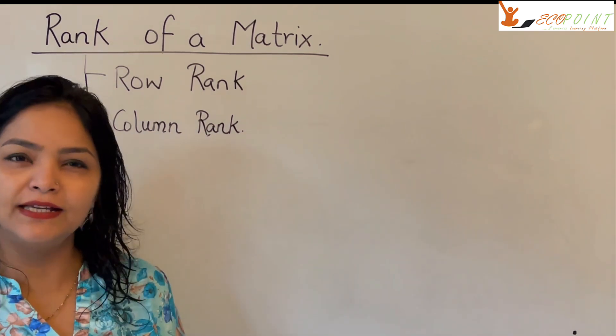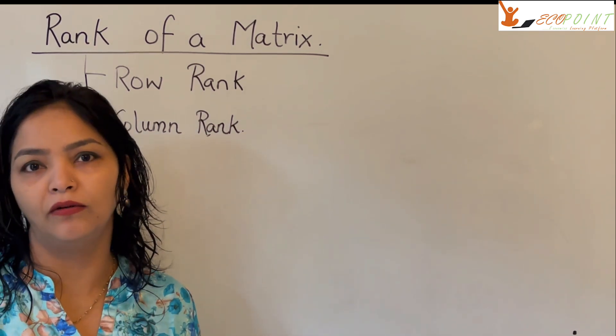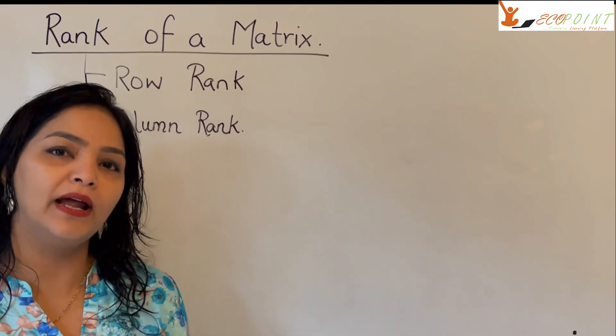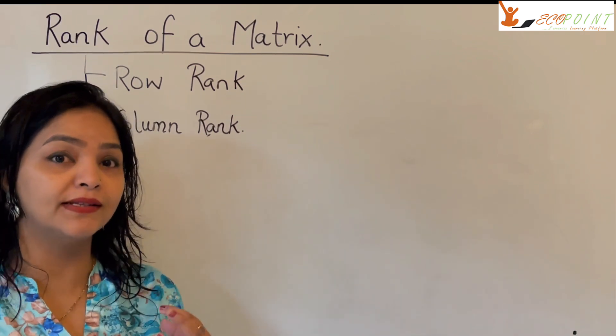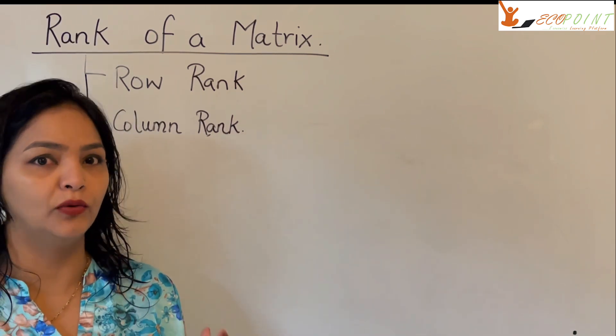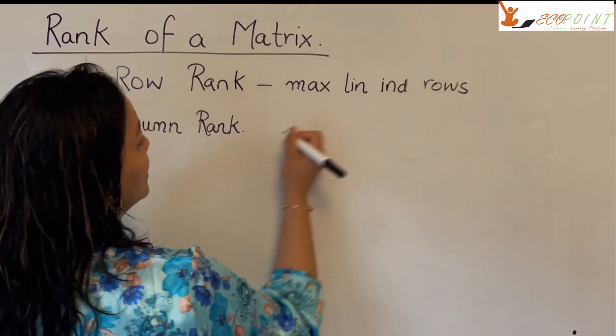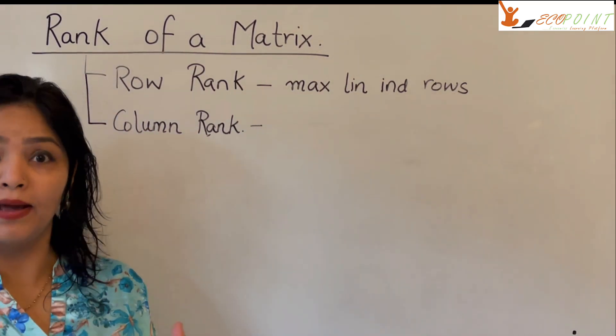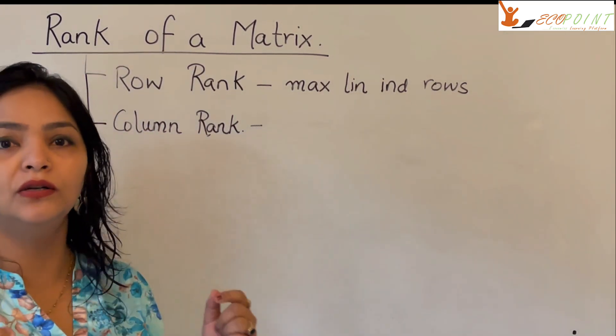Now, what is the meaning of row rank? What is the meaning of column rank? Well, row rank means the maximum number of linearly independent rows. On the other hand, column rank means the maximum number of linearly independent columns.